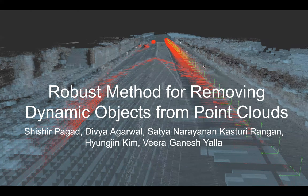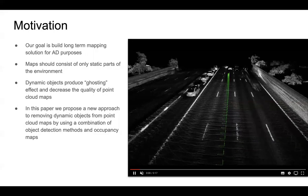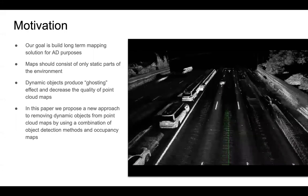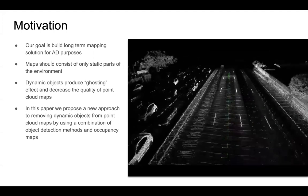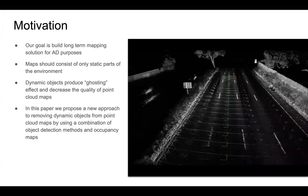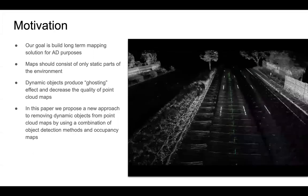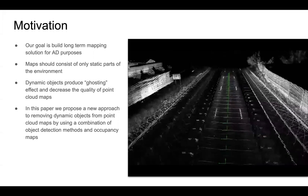In this video, we present our work on a robust method for removing dynamic objects from point clouds. The goal of this work is to build a long-term mapping solution for autonomous driving purposes for urban structured environments. Point cloud maps are built from data collected by driving a mobile mapping system on roads filled with dynamic objects. It is important to remove these dynamic objects as they can lead to ghosting effects, as seen in the video snippet.